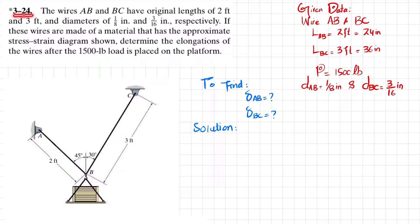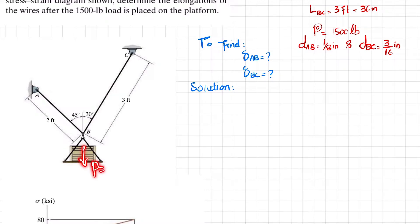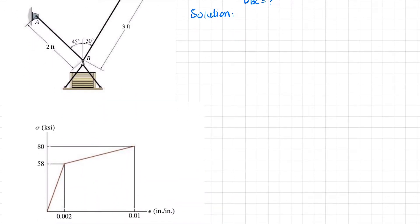Welcome back. Problem 3.24: wires AB and BC have original lengths of 2 feet and 3 feet, and diameters of 1/8 inch and 3/16 inch respectively. These wires are made of a material with an approximate stress-strain diagram shown. We need to determine the elongation of each wire after a 1500-pound load is placed on the platform. Wire AB and wire BC are shown in the figure.